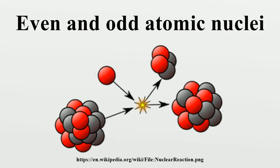Odd-neutron number: Actinides with odd-neutron number are generally fissile, while those with even-neutron number are generally not, though they are fissionable with fast neutrons. Only 195-78-Pt and 14-7-N have odd-neutron number and are the most naturally abundant isotope of their element. Actinides with odd-neutron number...